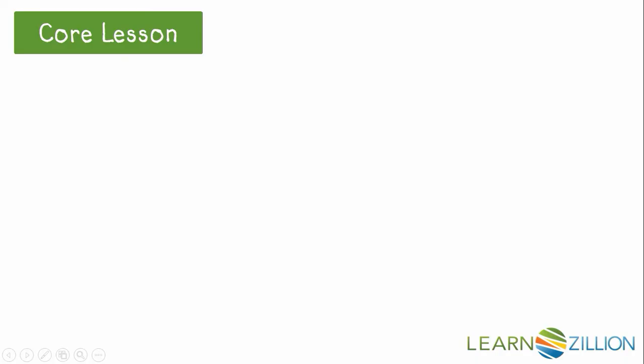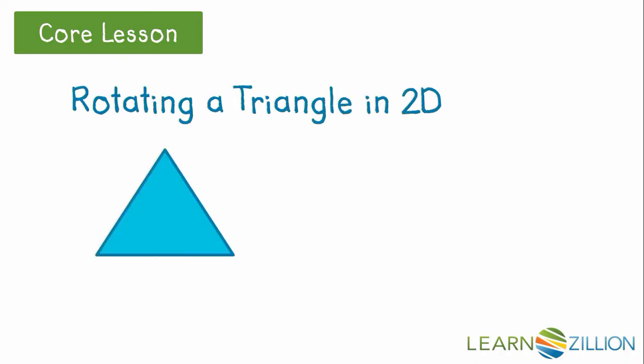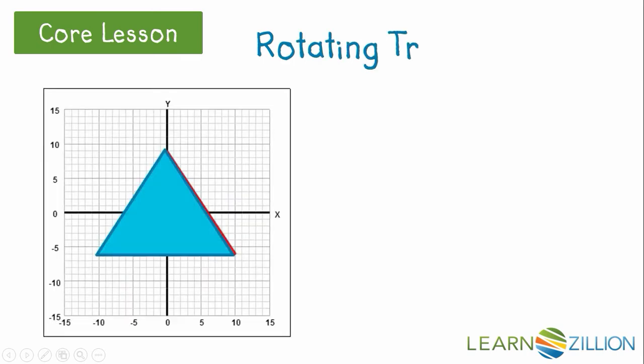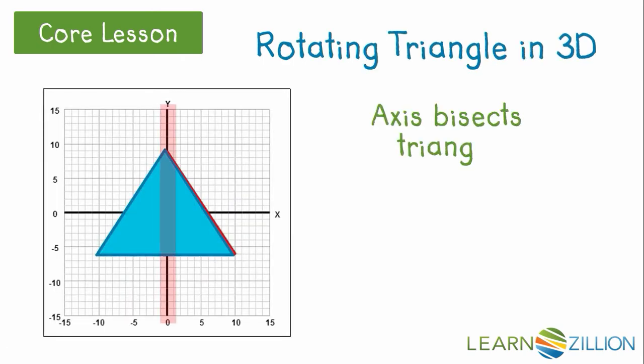Let's start with a simple figure, a triangle. If we rotate this in two dimensions, it would move like this. But in three dimensions, we're going to rotate it around an axis. Here's our axis, bisecting the figure. Let's watch what happens as it rotates.